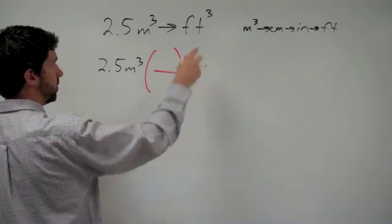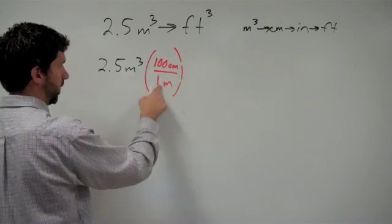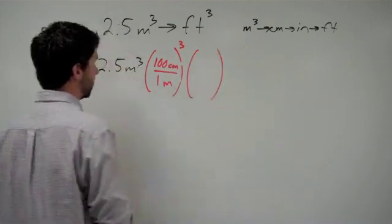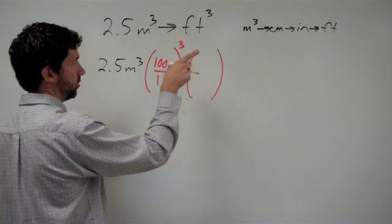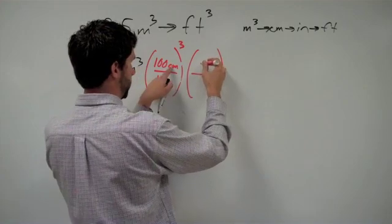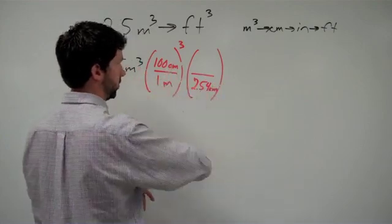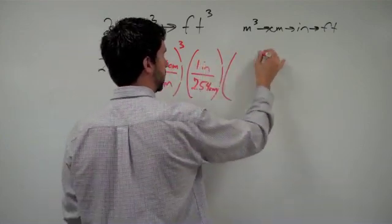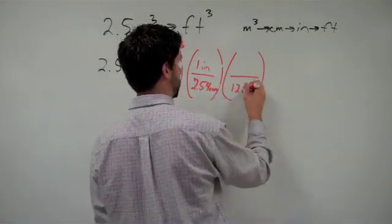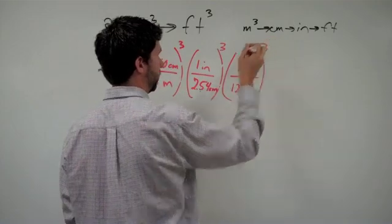So our conversion factors. We've got meters cubed to centimeters. I know I want centimeters on top and meters on the bottom. This is my conversion factor, but I need to do so three times. Then I want to get from centimeters to inches. That's 2.54 centimeters. But because I have centimeters on top here, I want centimeters down here so the centimeters will cancel. So it's one inch. And last of all, I have inches to feet. Inches are on top, so I want inches on bottom: 12 inches in one foot.